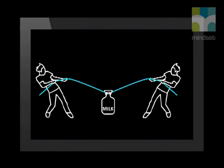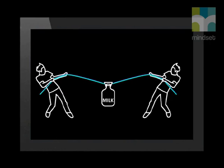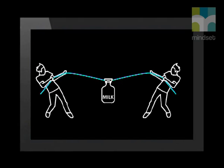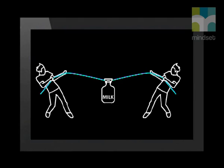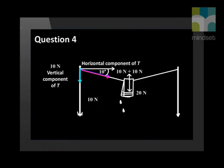If this just looks like abstract maths to you, you can try this with a friend. Each of you must hold one end of a rope and put a 2-litre bottle full of water in the middle — its weight is 20 newtons. Then try to pull the rope tight so that it makes a horizontal line with the bottle in the middle. You'll feel what the washing line pole feels, and you may be surprised. Compare the magnitude of the horizontal force that tries to bend the pole with the 10 newtons vertical force that helps to hold the towel up. You might be surprised at how much greater the force on the pole is than the weight of the towel on the line.